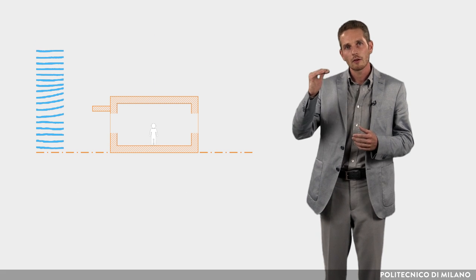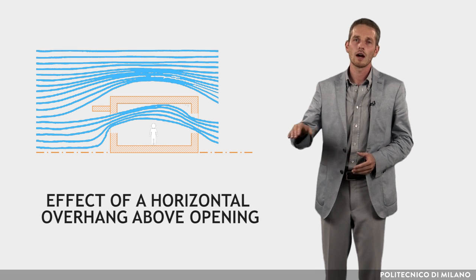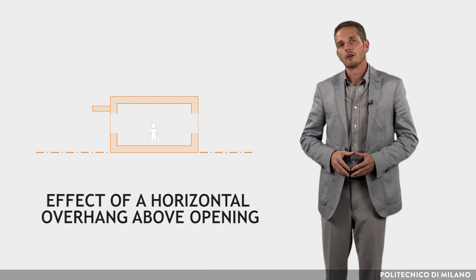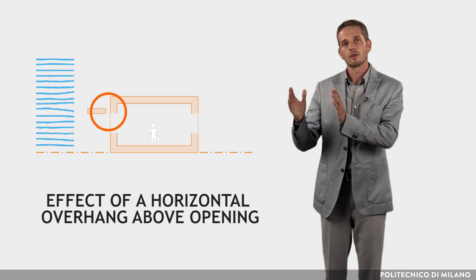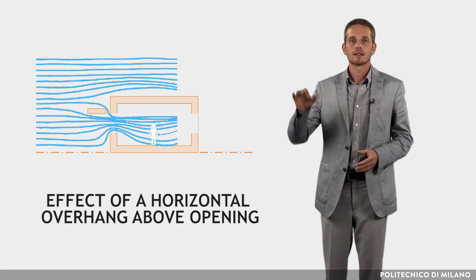A horizontal overhang above an opening deflects flow upwards. If the overhang is spaced away from the wall, the flow is deflected at half-height.